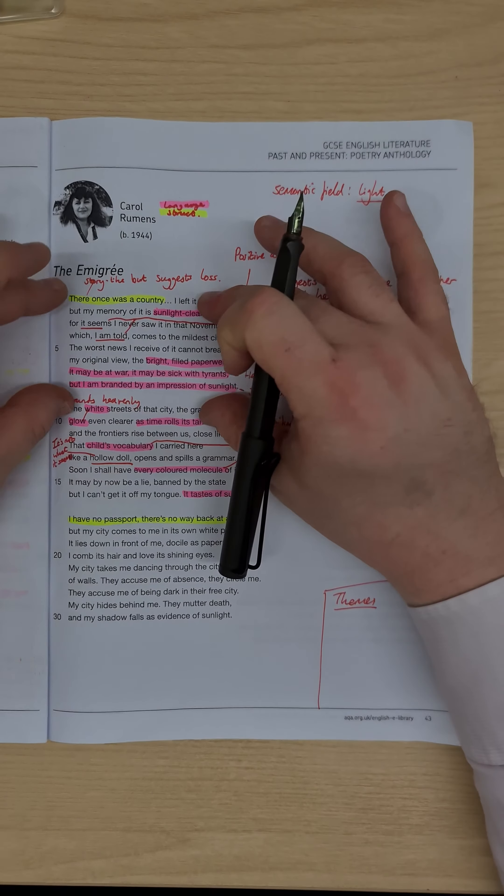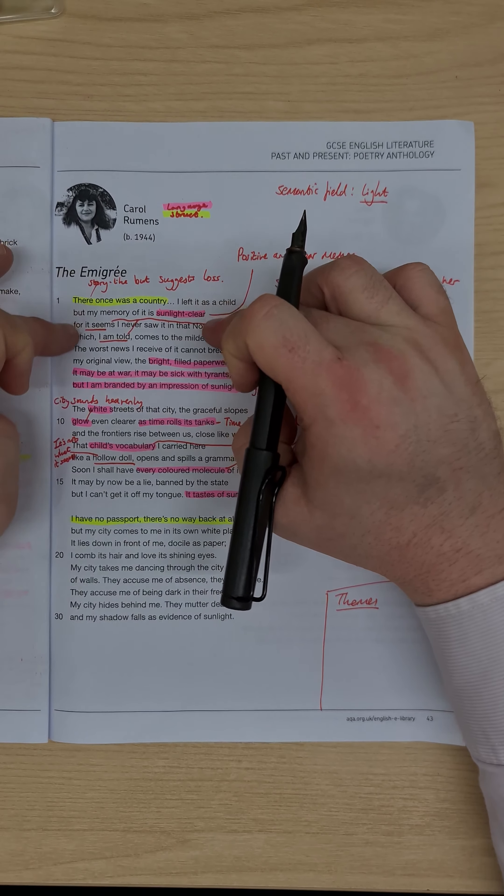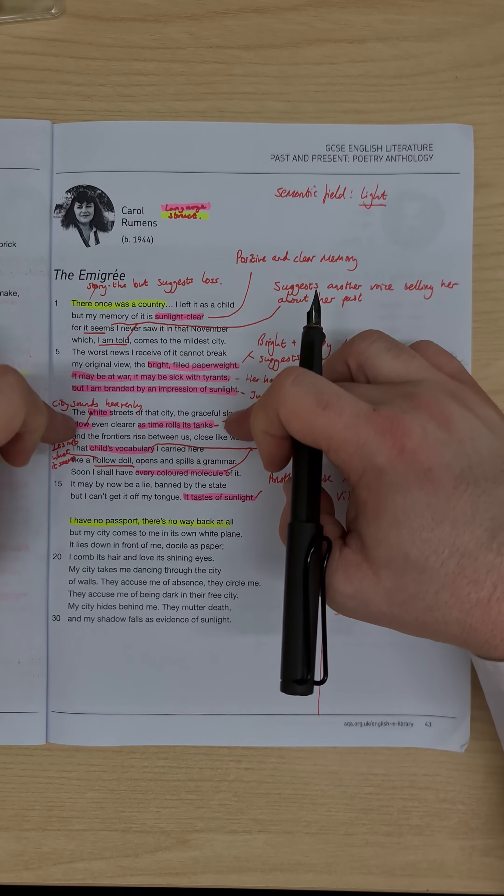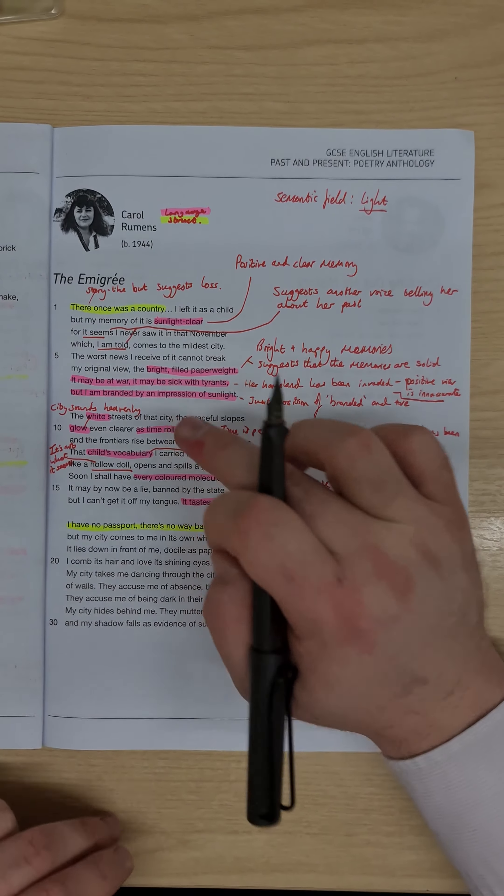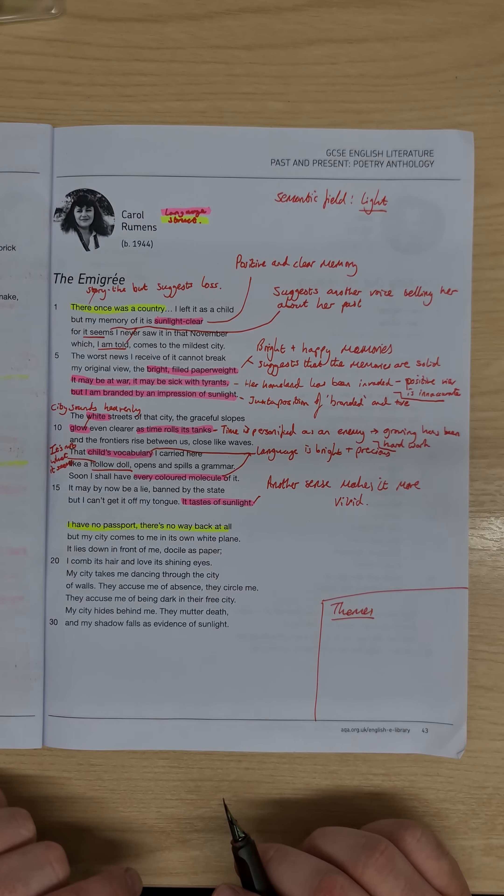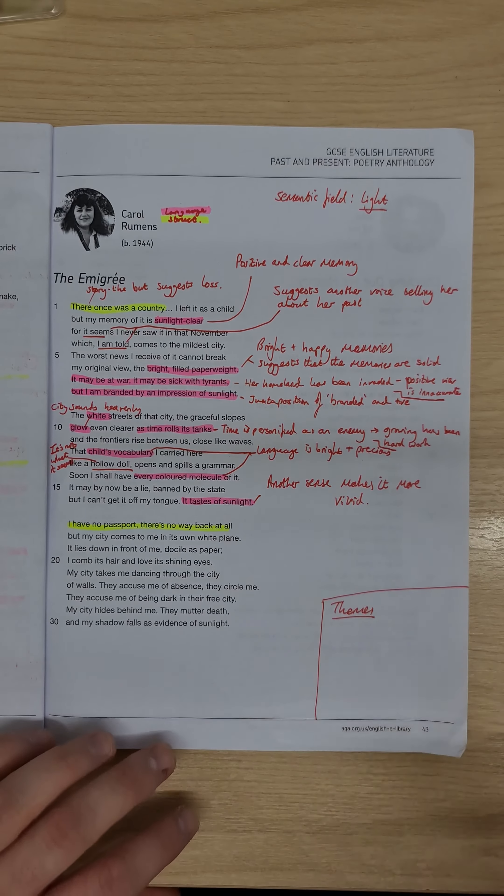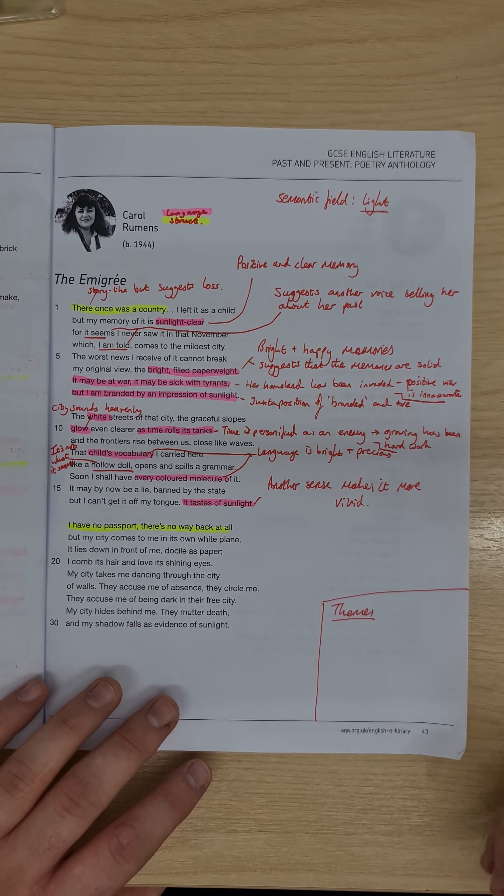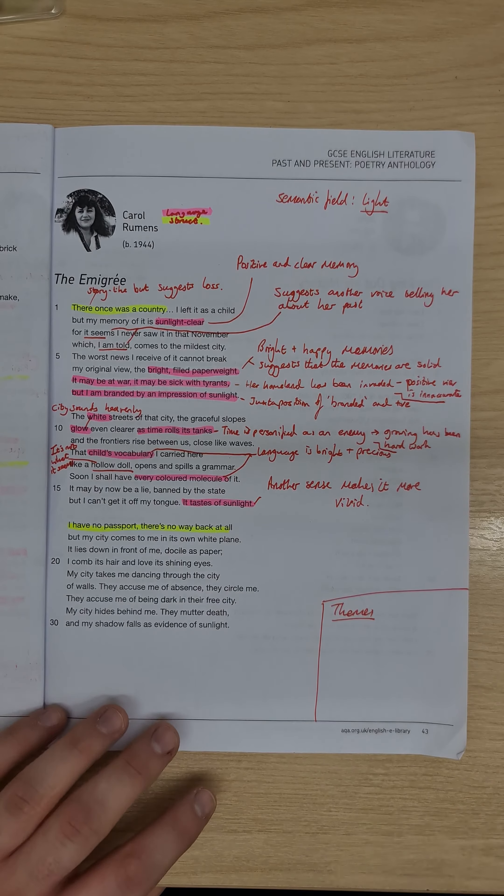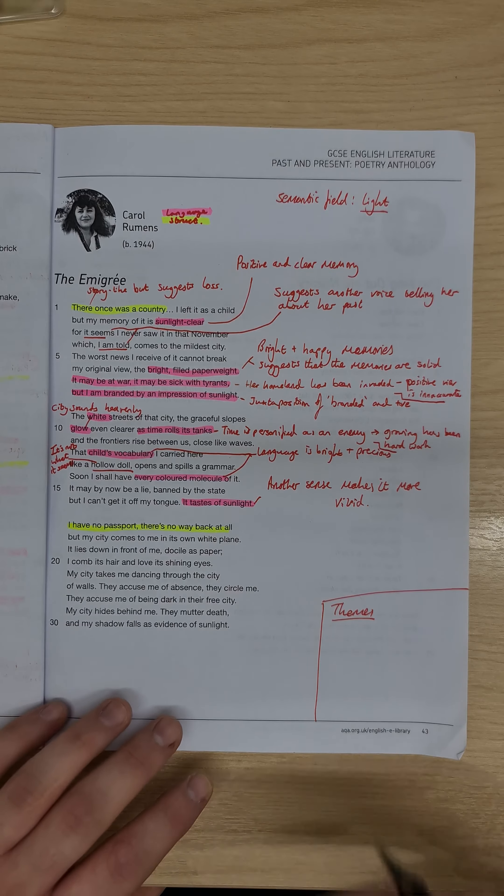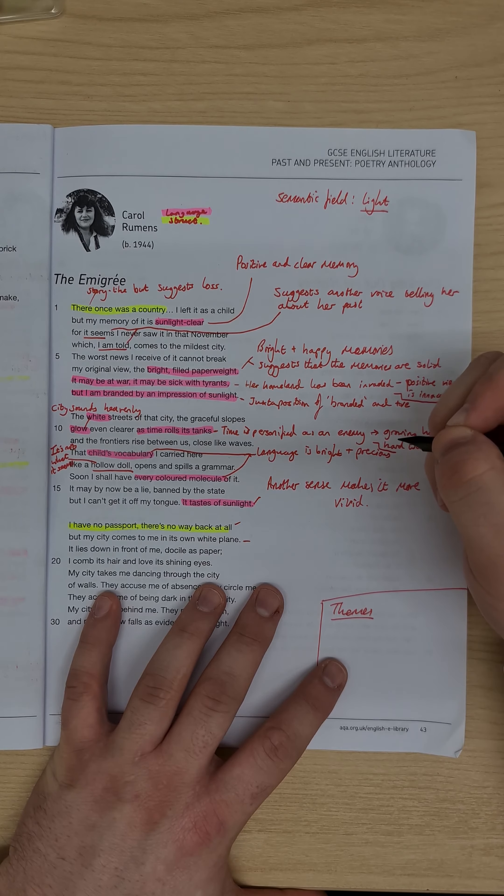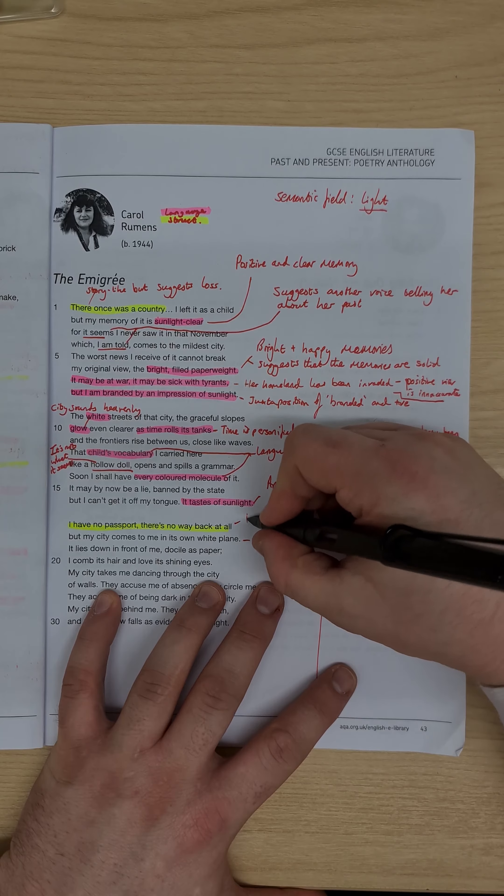Suddenly she's all the positive memories, she said something's happening, the worst news, still good, I remember my city, it's all wonderful, and then we start to get these hints that something's not right, it may now be a lie banned by the state, and then it hits us on the start of that third stanza, I have no passport and there's no way back at all, but my city comes back to me in its own white plain, and here that white plain represents the speaker's memories, so looking at the first two lines here, so the first line of stanza sounds hopeless, so it's hopeless